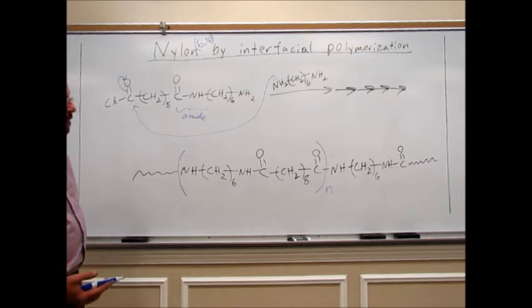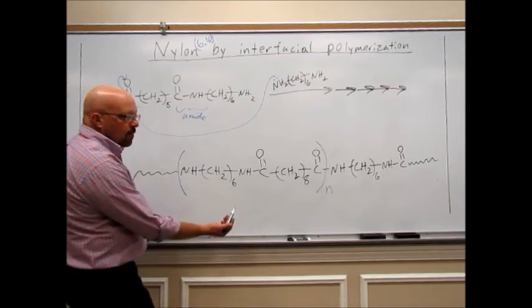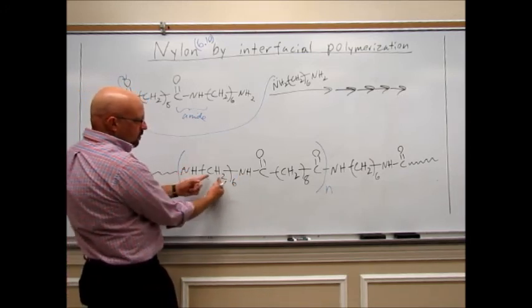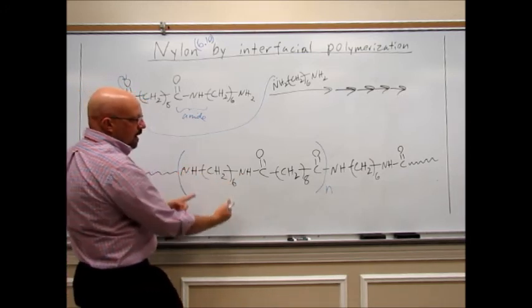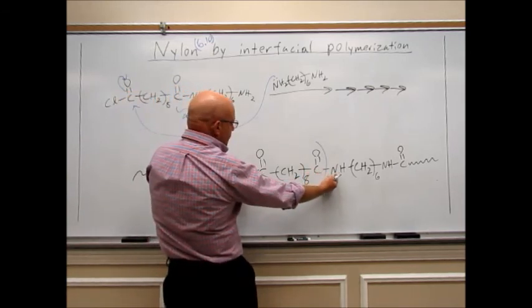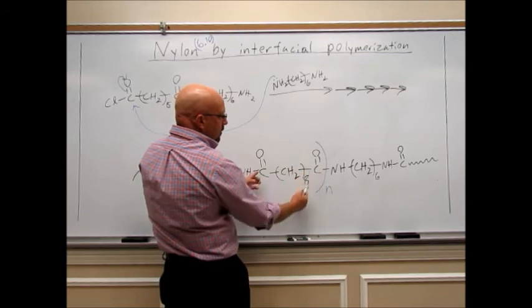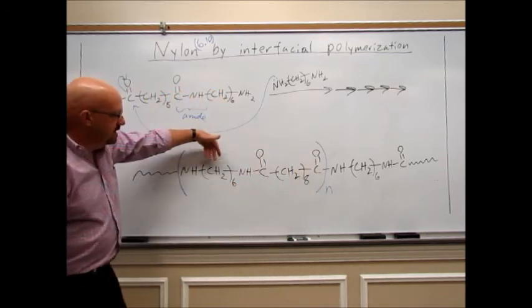If you're looking at that repeating unit, you can probably see where we get the Nylon-610. The 610 is the number of carbons. There's six carbons between these two nitrogens, and then between the next two nitrogens, you've got the eight CH2s and the two carbonyls. There's 10 carbons there. It's a Nylon-610.